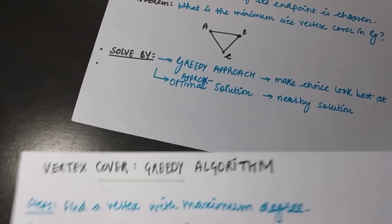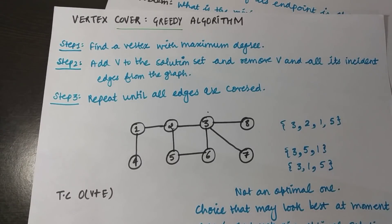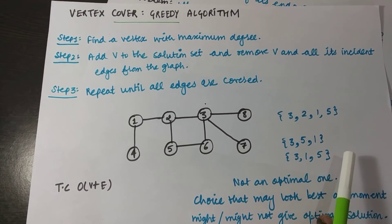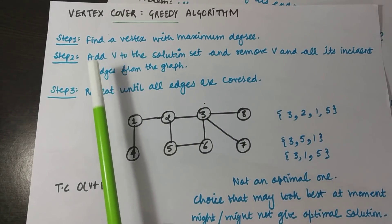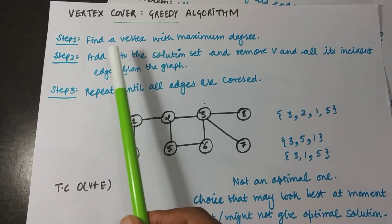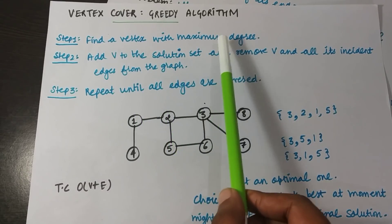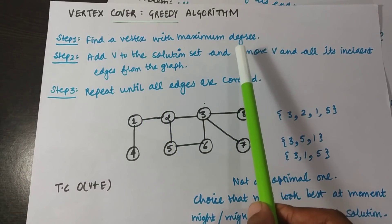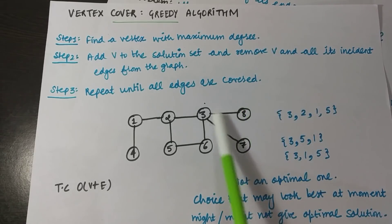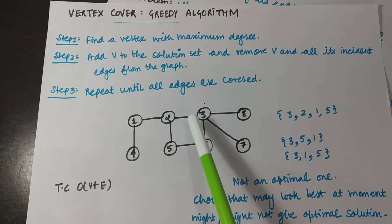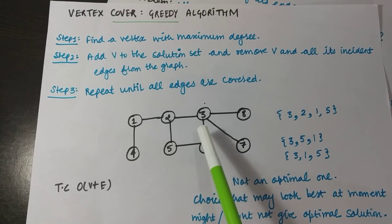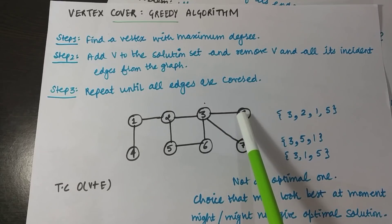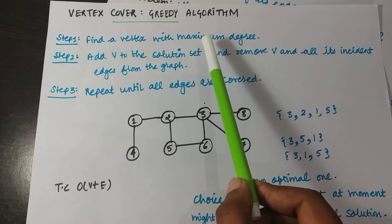Our first approach is the greedy algorithm for vertex cover. This algorithm has three steps. Step one: find the vertex with the maximum degree. The degree of a vertex is the number of edges associated with it. For example, vertex 3 has four edges so its degree is four; vertex 6 has two edges so its degree is two; vertex 8 has one edge so its degree is one.